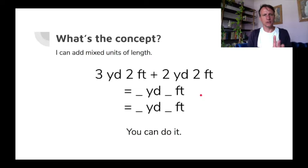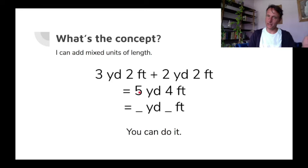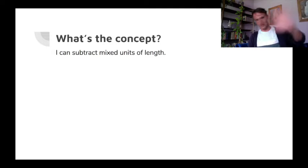Going through the same thing step by step: three yards two feet plus two yards two feet. Crunch the numbers — five yards, four feet. We can decompose out a yard there, so now we have six yards and that leaves one foot. Excellent. Now we're going to subtract — that's it for addition. That's as tough as that gets.